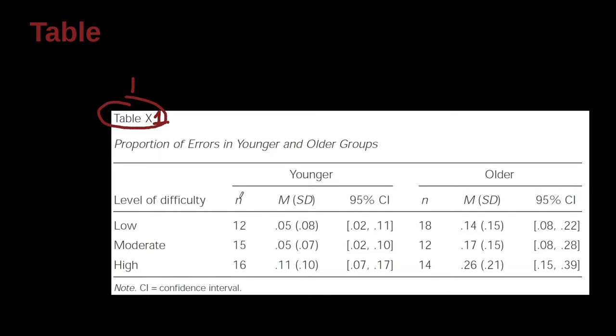So we have the n, lowercase n, which is the subgroup size, the m, which is the mean, the standard deviation inside of parentheses, and then we have confidence intervals. And then down here we have low, moderate, and high inside of the body.